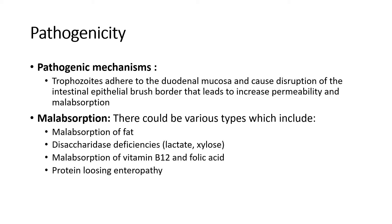Pathogenicity — mechanism: the trophozoite adheres to the duodenal mucosa and causes disruption of the intestinal epithelial brush border, leading to increased permeability and malabsorption. Malabsorption can be divided into: malabsorption of fat, disaccharide deficiencies, malabsorption of vitamin B12 and folic acid, and protein loss enteropathy.